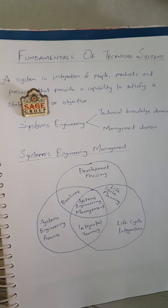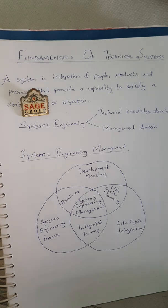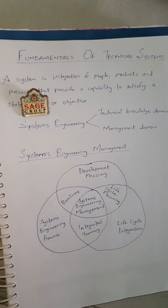Development phasing controls the design effort by developing design baselines that govern each level of development. It interfaces with acquisition management by providing key events in the development process where design viability can be measured. The viability of the baseline development is a major input for acquisition management and milestone decisions. As a result, the timing and coordination between the technical development phasing and the acquisition schedule is critical to maintain a healthy acquisition program.